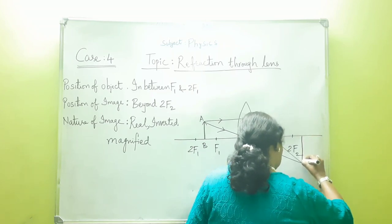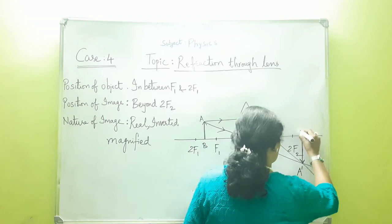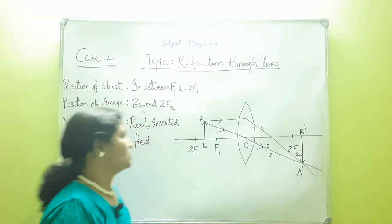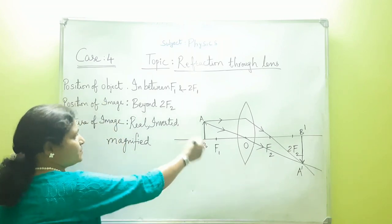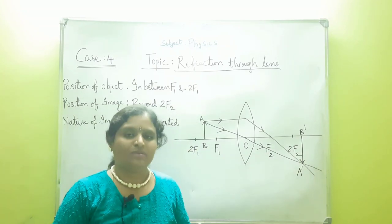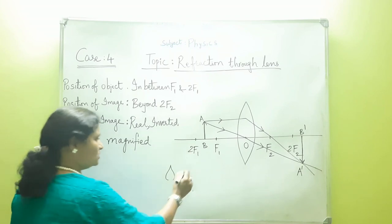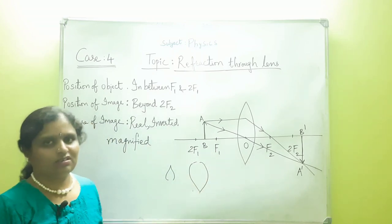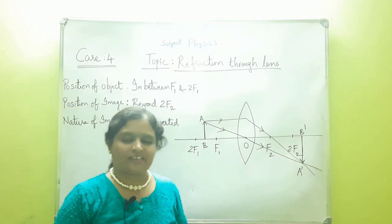The image A'B' is drawn at that point — it is a real, inverted and magnified image formed in case 4. The object is placed between F1 and 2F1, the image is formed beyond 2F2, and the nature of the image is real, inverted and magnified. If the candle flame is of a certain size, the image will be magnified and inverted.